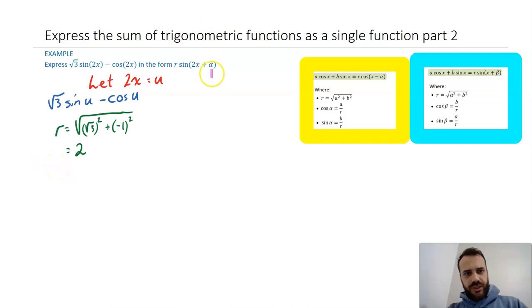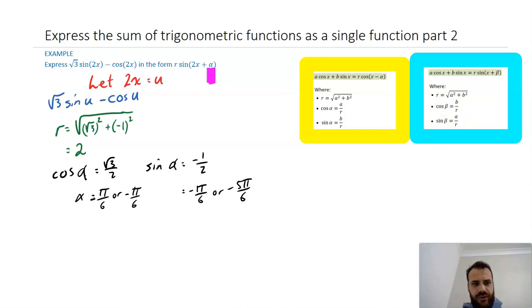And my next job is to figure out what this alpha value is here, and because I'm trying to create a sine function, I'm following this information here. So, it's going to be cos alpha equals b over r, and sine alpha equals a over r. So, I've subbed in my values here.